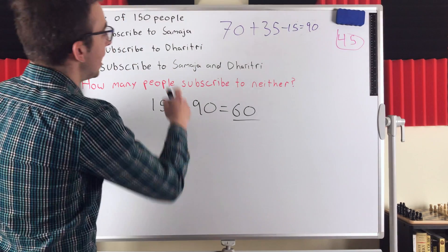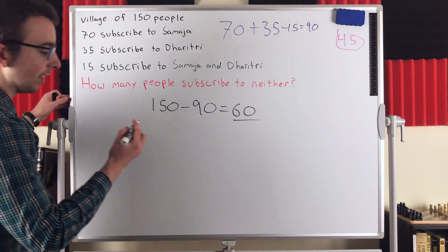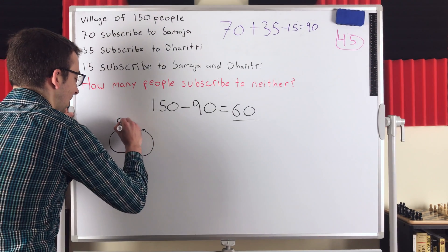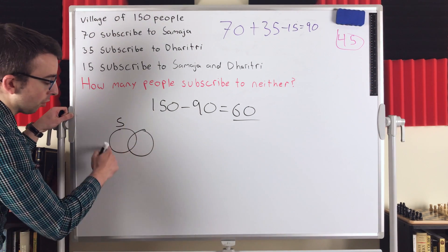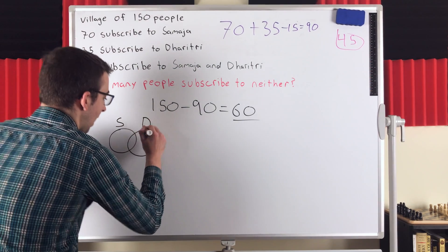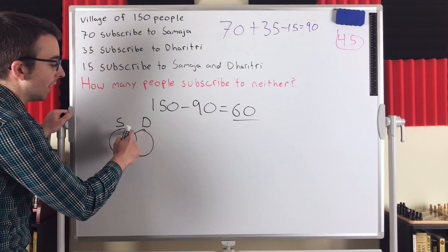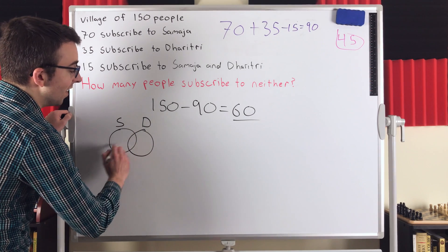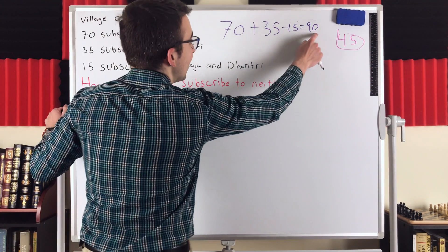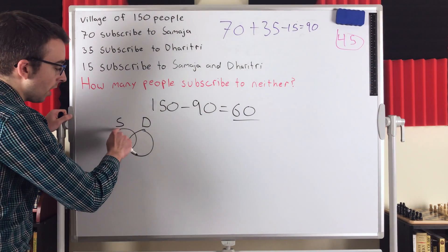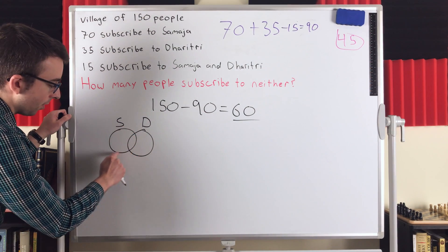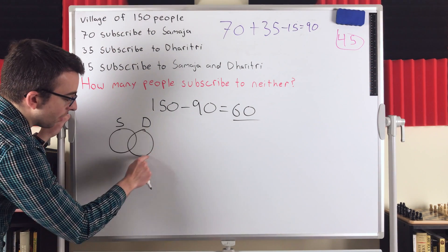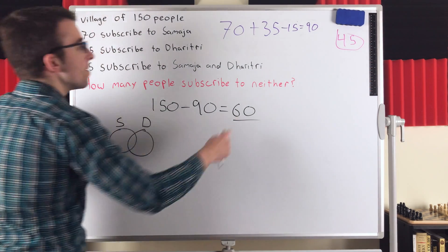We're trying to count, if we think of these as sets, which is a useful thing to do, we're trying to count the number of people in this set of people who are subscribed to the Samajah, and with the union of this set, people who are subscribed to Dhritri. We want to count the number of people in the union of these two sets. That's this 90 here. So we count the number of people in this circle, S, which is 70. We add that to the count of the people in this set, D, that 35.